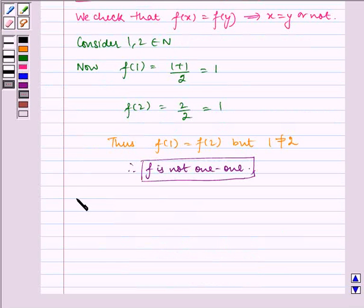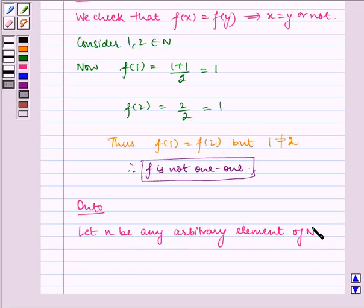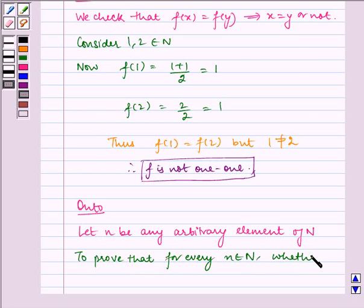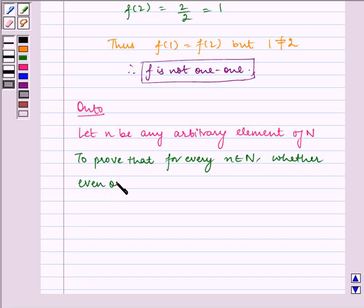Now let us check for onto. Let n be any arbitrary element of N. We have to prove that for every n belongs to N, whether even or odd, there exists its pre-image in N.